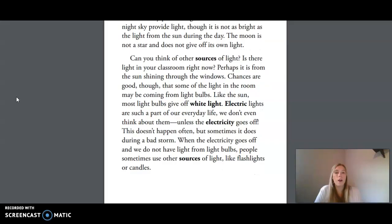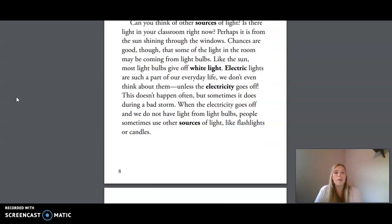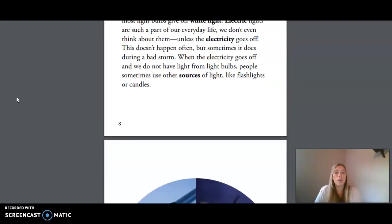Electric lights are such a part of our everyday life, we don't even think about them unless the electricity goes off. This doesn't happen often, but sometimes it does during a bad storm. When the electricity goes off and we do not have light from light bulbs, people sometimes use other sources of light, like flashlights or candles.